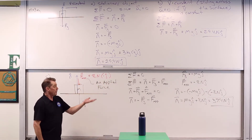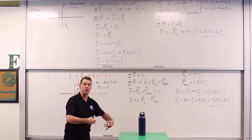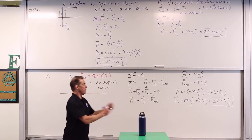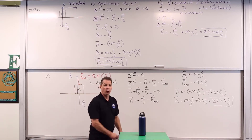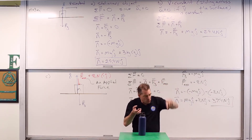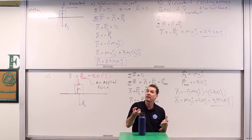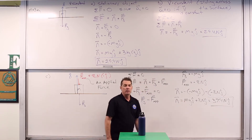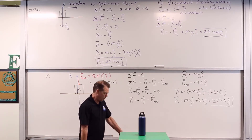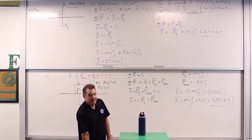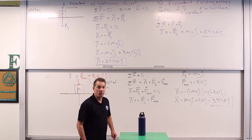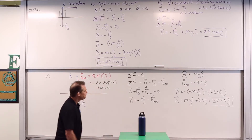The surface has to exert even more force on it when we push down on it, because the object pushes down on the surface with more force and the surface has to react. Pushing down harder increases the normal force; lifting upward reduces it. You can verify this on a bathroom scale — pull down on the counter and you seem to weigh more, push up on the counter and you appear to weigh less.